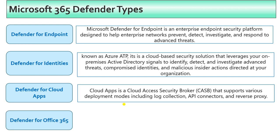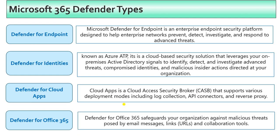Microsoft Defender for Office 365 protects your email infrastructure. If you have a suspicious attachment in your email, Defender for Office 365 will scan it. If there is a suspicious URL in your email, it will scan and block it using self-healing technology — blocking malicious attachments or URLs automatically.